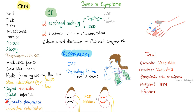Raynaud's phenomenon is the most common initial finding. GI involvement includes dystrophic calcification, decreased esophageal motility leading to dysphagia and reflux disease, decreased intestinal motility leading to malabsorption, and wide-mouth diverticula leading to bacterial overgrowth. The respiratory system shows interstitial pulmonary fibrosis, and respiratory failure is the most common cause of death. Renal problems include glomerular vasculitis, arteriolar vasculitis, hyperplastic arterial sclerosis, malignant hypertension, and infarctions. ACE inhibitors work excellently for scleroderma nephropathy.